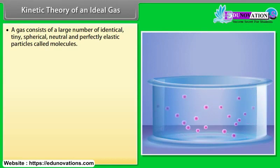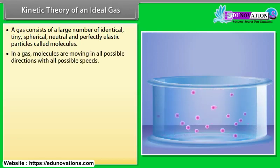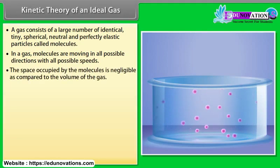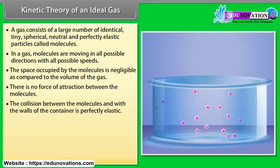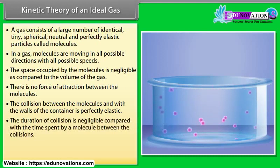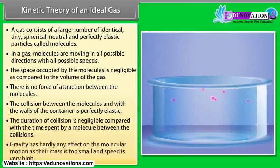Kinetic theory of an ideal gas: A gas consists of a large number of identical, tiny, spherical, neutral and perfectly elastic particles called molecules. In a gas, molecules are moving in all possible directions with all possible speeds. The space occupied by the molecules is negligible as compared to the volume of the gas. There is no force of attraction between the molecules. The collision between the molecules and with the walls of the container is perfectly elastic. The duration of collision is negligible compared with the time spent by a molecule between the collisions. Gravity has hardly any effect on the molecular motion as their mass is too small and speed is very high.